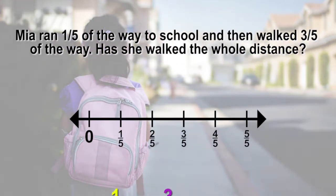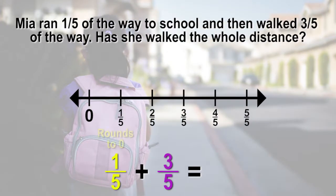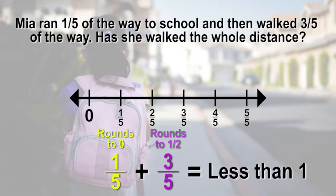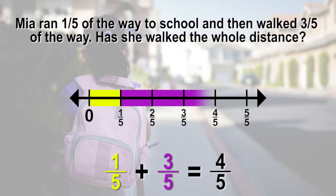If we estimate our answer, we can see that 1 fifth rounds to zero. We can estimate 3 fifths to be more than 1 half, so we would round to 1 half. 1 half and zero is less than 1. We will know our answer will be less than 1. The exact equation is 1 fifth plus 3 fifths equals 4 fifths or less than 1 whole.